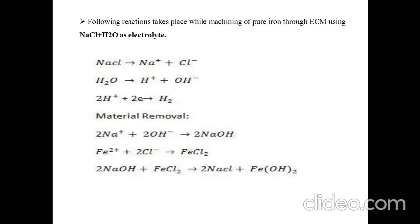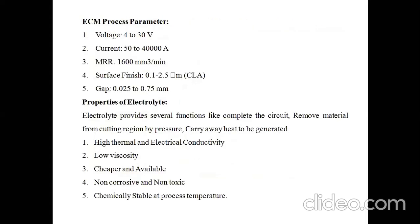The chemical reaction at the machining position gives: 2 NaCl + FeOH₂. This is the chemical reaction expressed at the machining position. Important parameters of ECM: working voltage required is around 4 to 30 volts, current 50 to 40,000 ampere. Material removal rate is larger compared to other non-conventional machining processes — around 1600 mm³ per minute. Surface finish is also better, around 0.1 to 2.5 micrometer. The gap between tool and workpiece is around 0.025 to 0.75 mm.